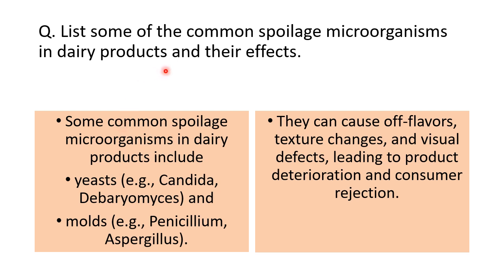Another question: can you list some common spoilage microorganisms found in dairy products and their effects? Common spoilage microorganisms include yeasts like Candida or Debaryomyces, and molds like Penicillium and Aspergillus. They cause off flavors, texture changes, and visual defects, which lead to product deterioration.